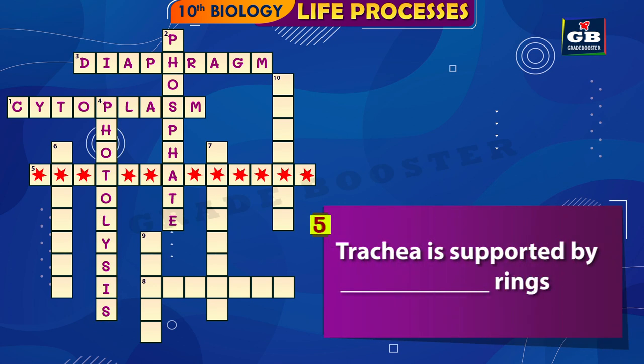5 Across: The trachea is supported by dash rings.